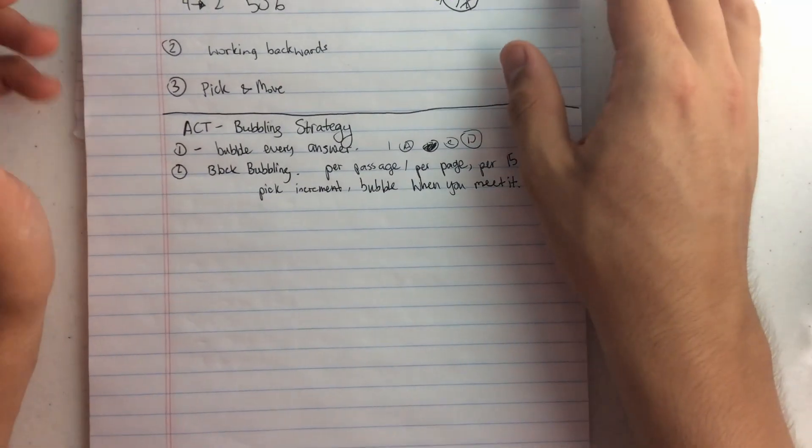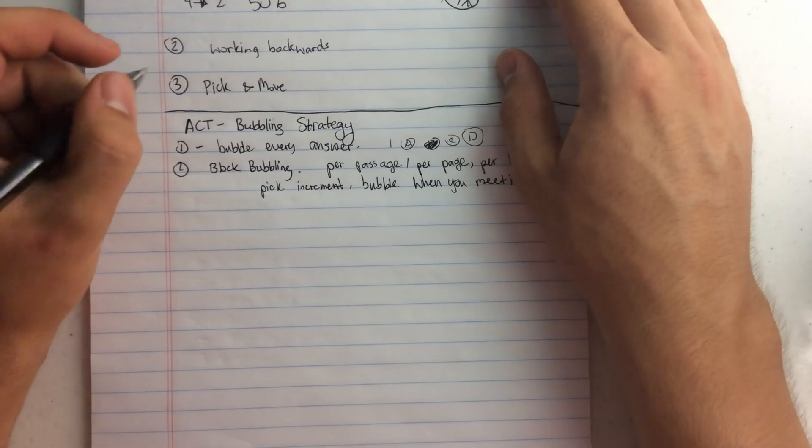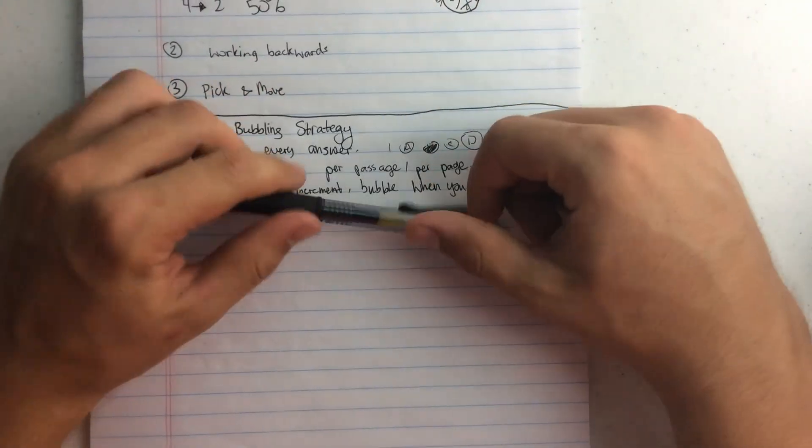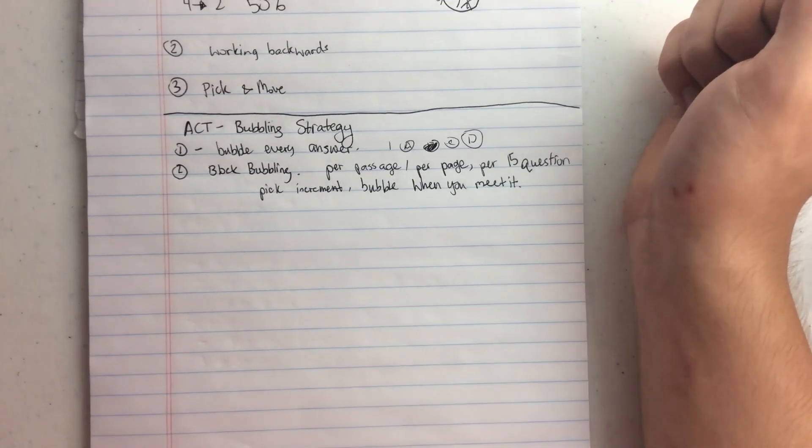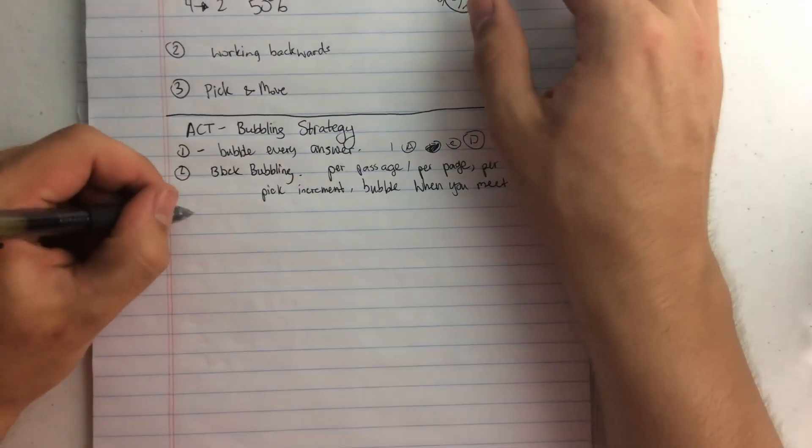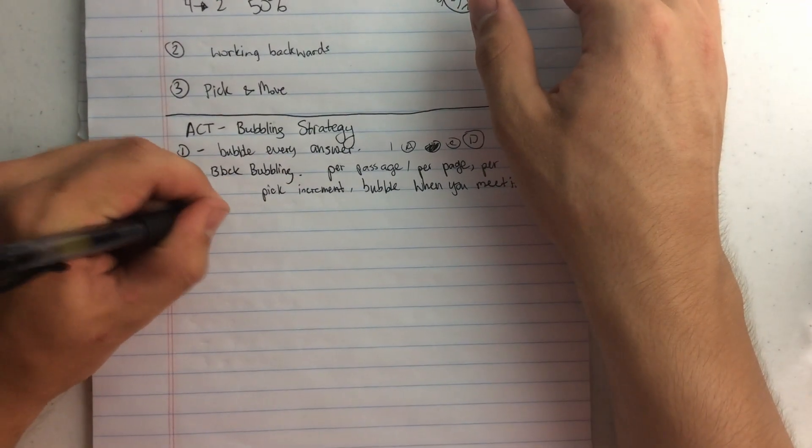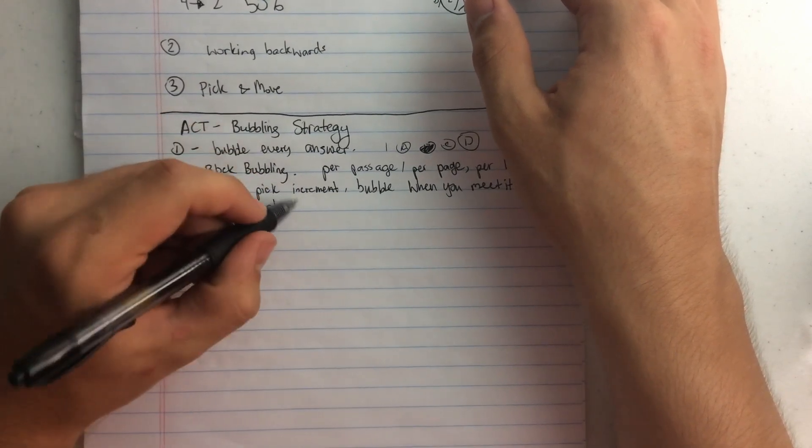So for English, another thing I would try to do in block bubbling, because this strategy will leave you possibly low on time and then you have all these bubbles to fill in. So if the five minute break is called, start to bubble if you haven't done any yet.